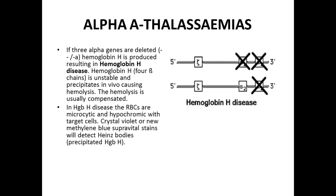When three alpha genes are deleted — two from one allele and one from the second — the resulting condition is Hemoglobin H disease. In this condition there are four beta chains and only one alpha chain. This hemoglobin is unstable and precipitates. Due to this precipitation it causes hemolysis, so Hemoglobin H disease patients present with typical features of hemolytic anemia.